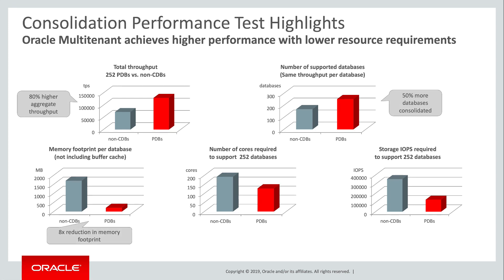The third test shows the dramatic memory efficiencies of multitenant. Excluding buffer cache, multitenant required one-eighth of the memory of the other strategy. Test 4 might be viewed as the inverse of test 2. To deliver a specific throughput per database would require 50% more cores — one might think of this as an overhead of one-third of a core per single-instance database. That's really a third of a finger. Nonetheless, 64 cores is a lot, especially when server software is priced per core.